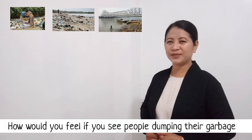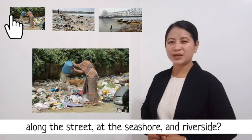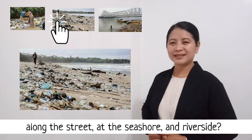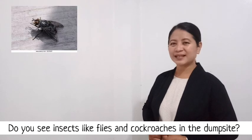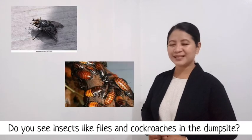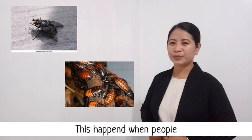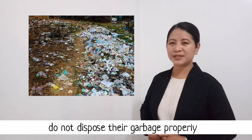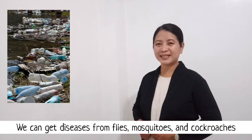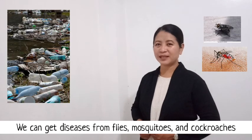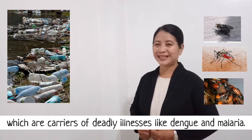How would you feel if you see people dumping their garbage along the street, at the seashore, and riverside? Do you see insects like flies and cockroaches in the dump site? This happens when people do not dispose of their garbage properly. We can get diseases from flies, mosquitoes, and cockroaches, which are carriers of deadly illnesses like dengue and malaria.